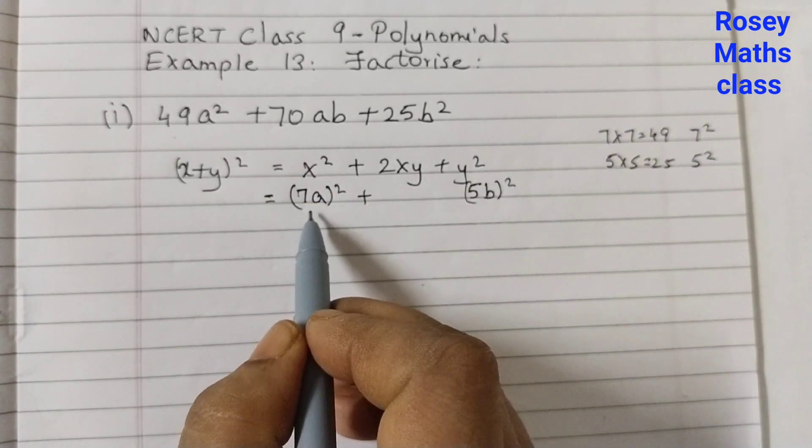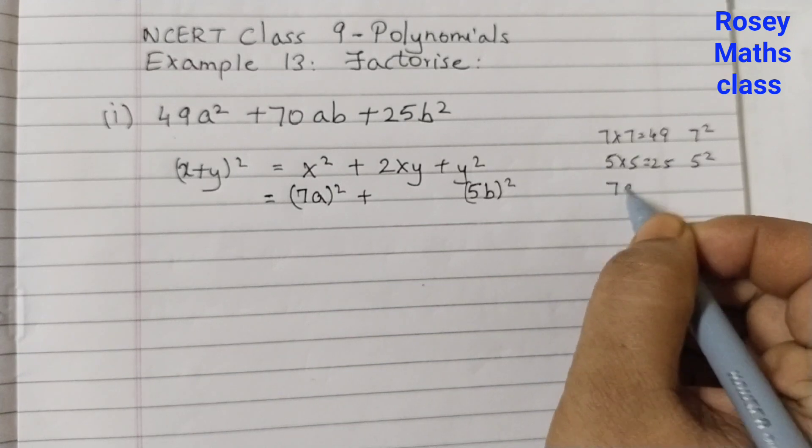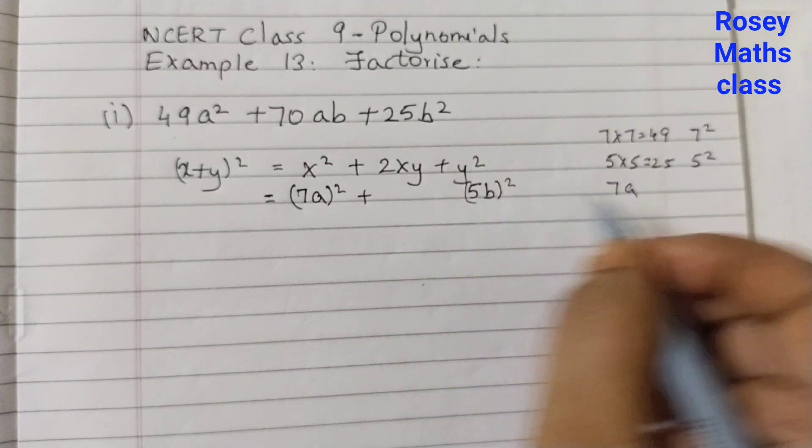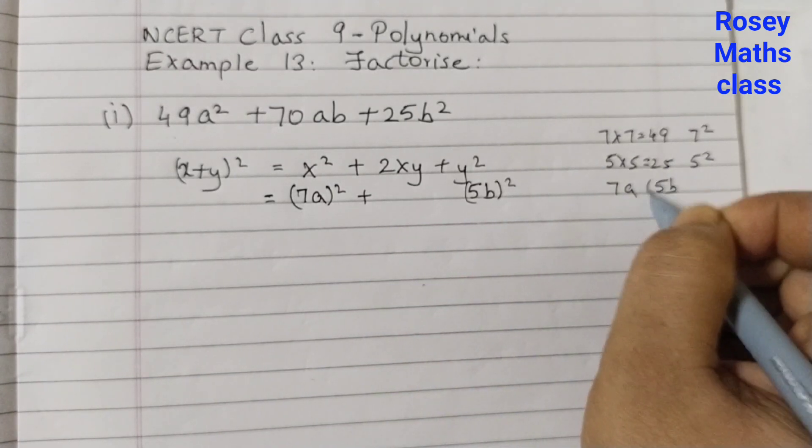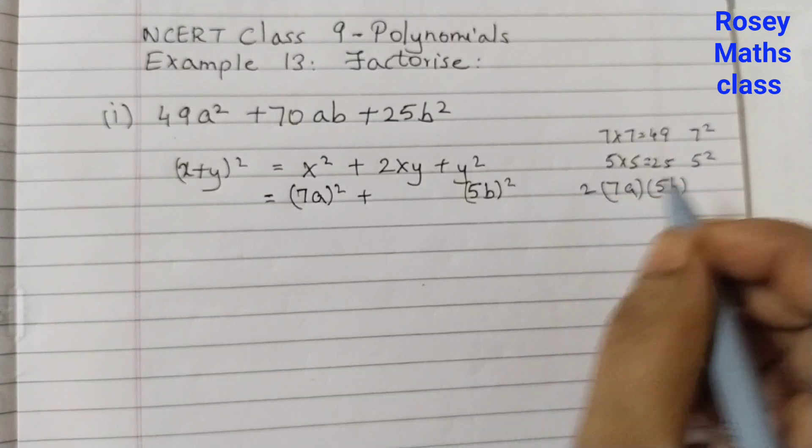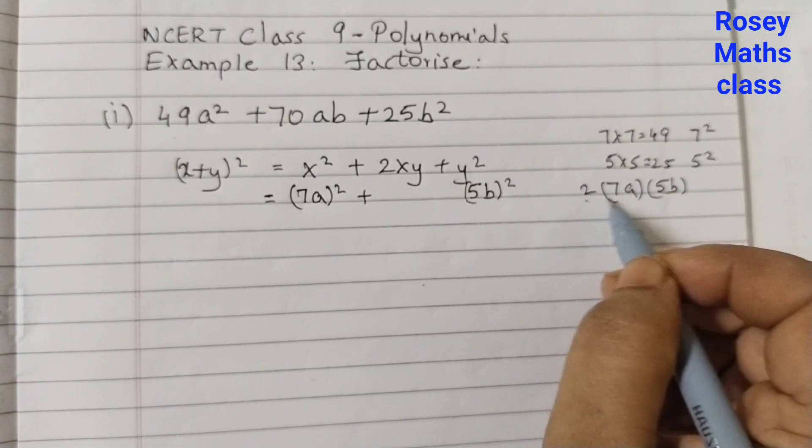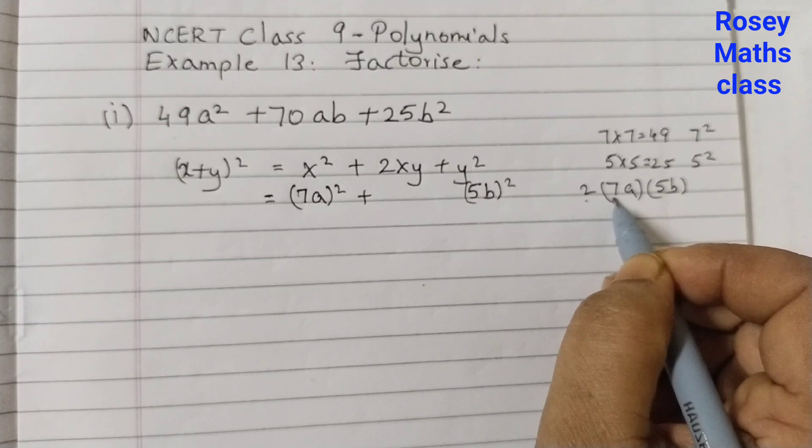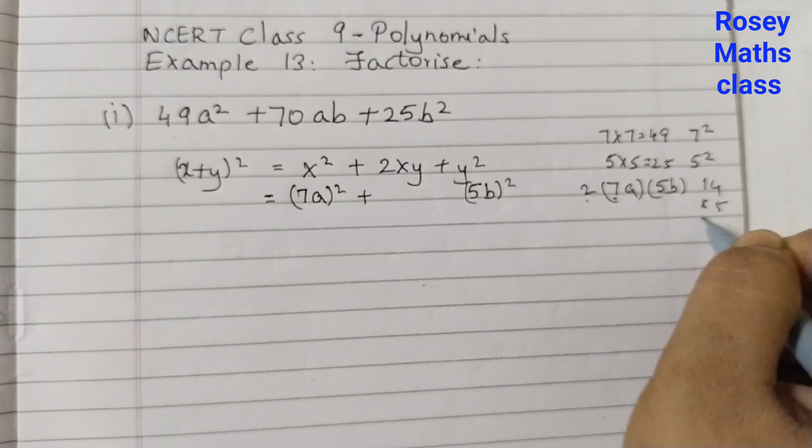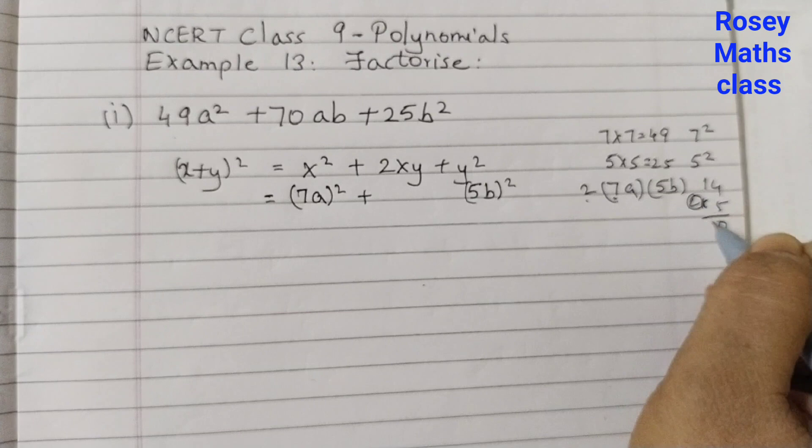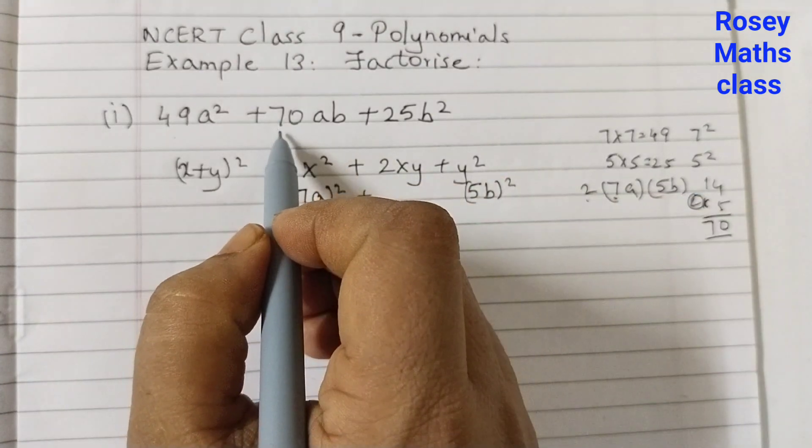Now 2xy, x is 7a, y is 5b and 2. If you multiply this, 2 into 7 is 14, 14 into 5. 5 plus 20, 0 to 70. We are getting 70.